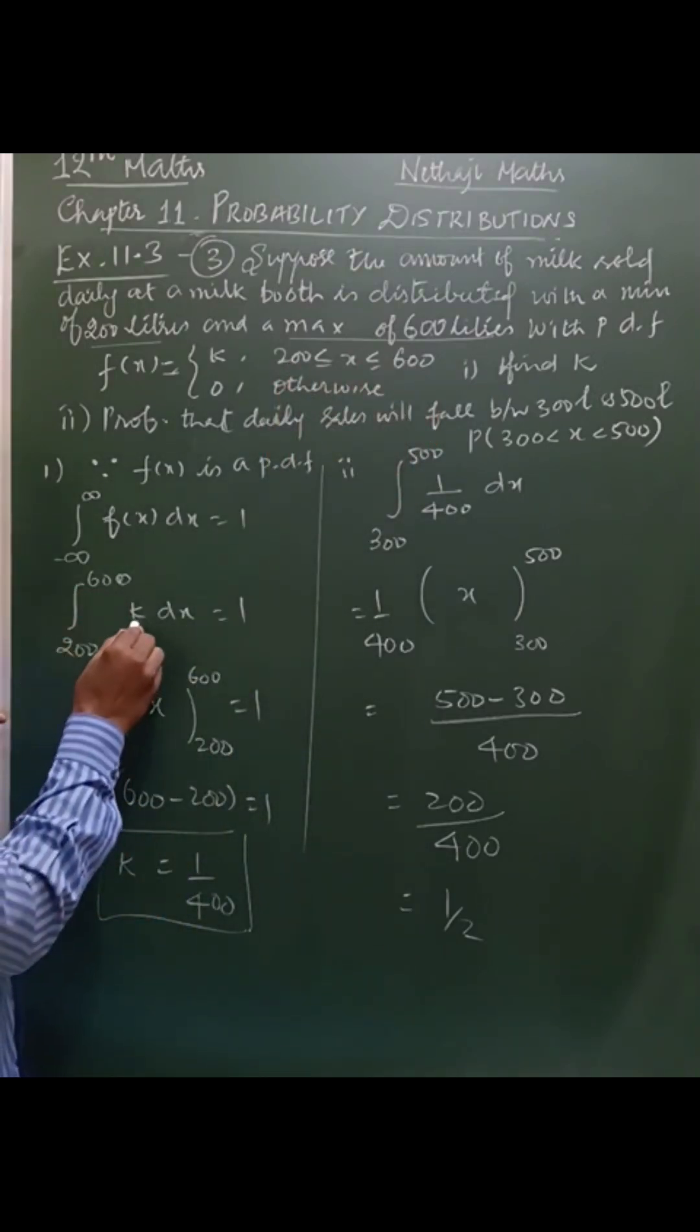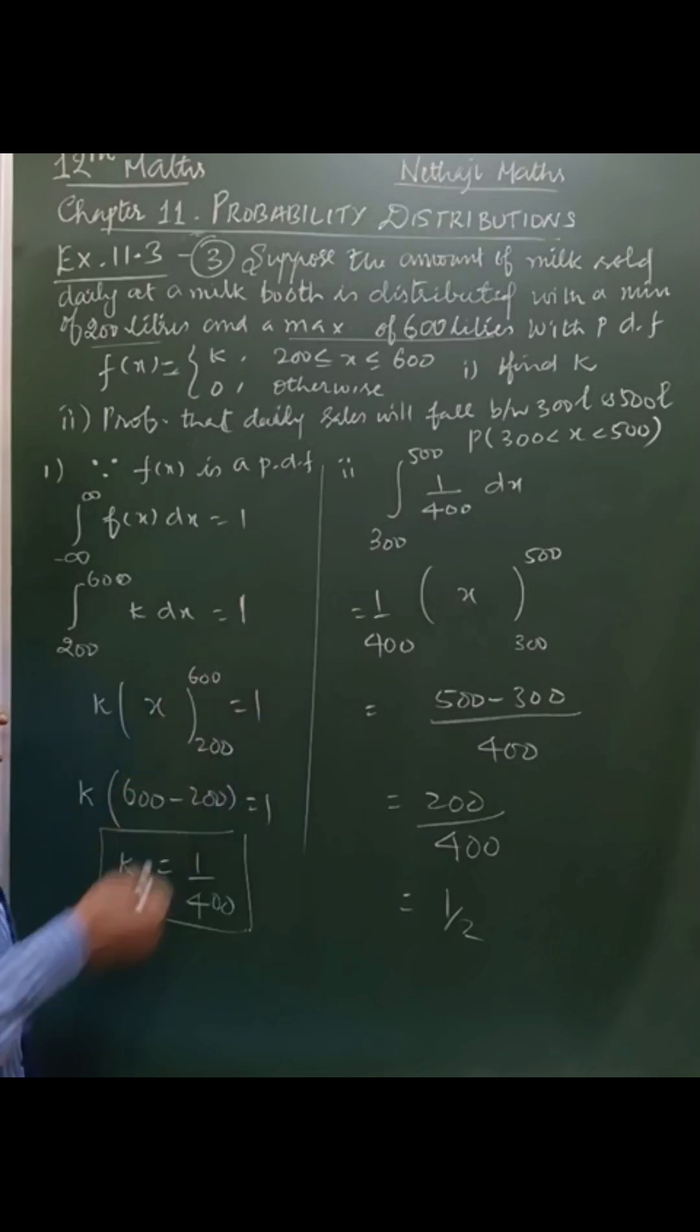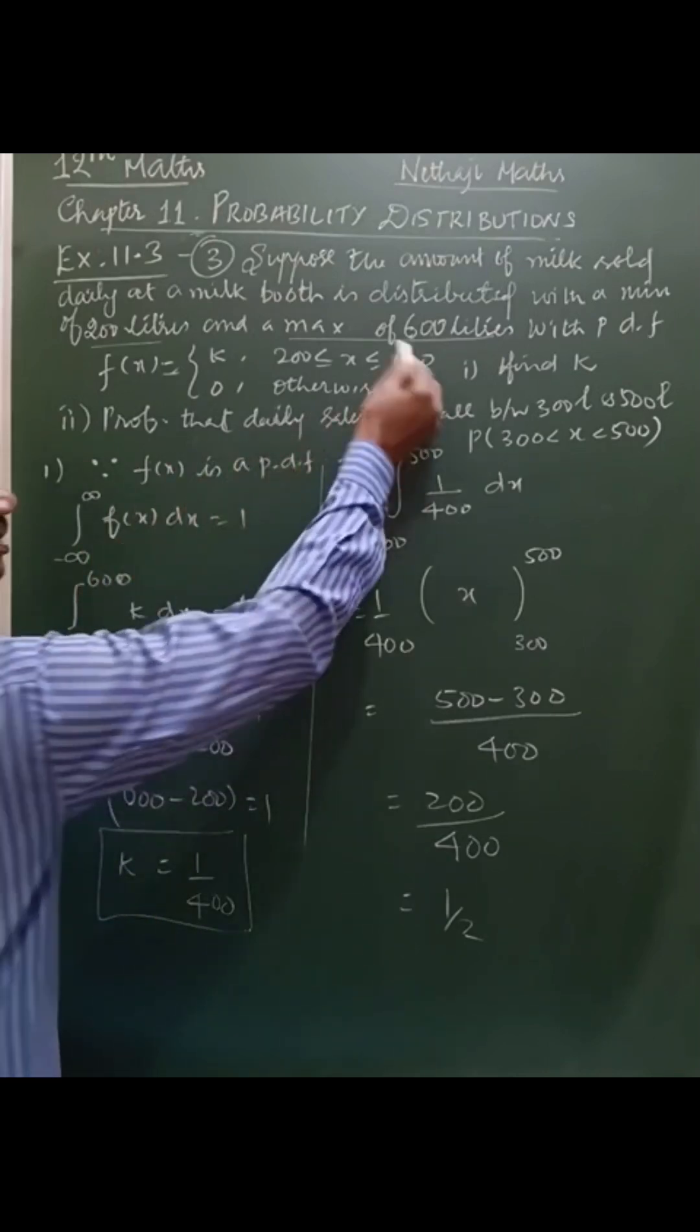So, integral 200 to 600, k into dx is equal to 1. You have to find the value of k defined here.